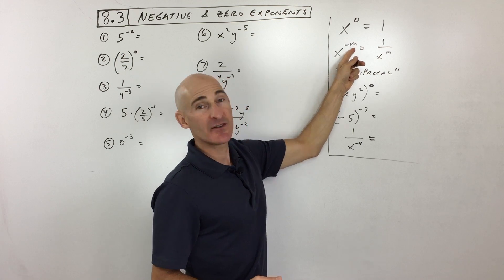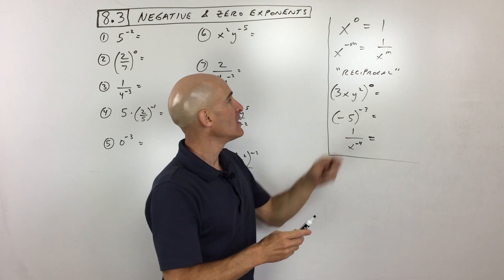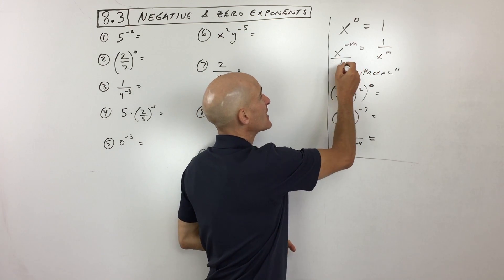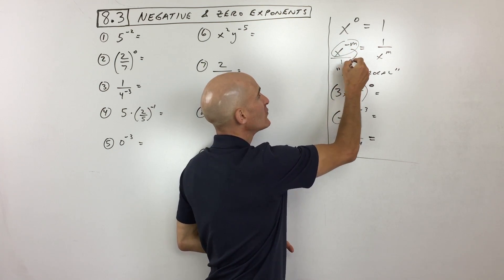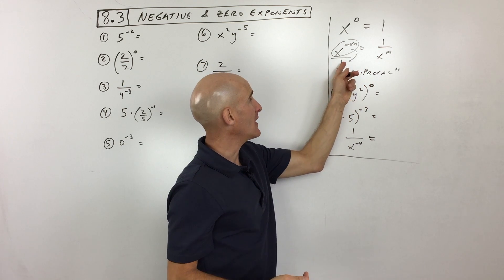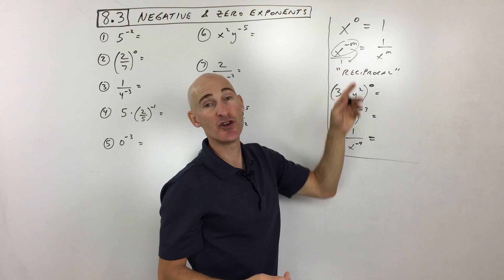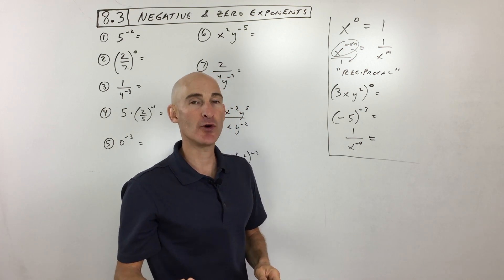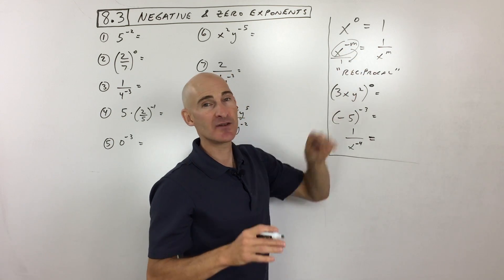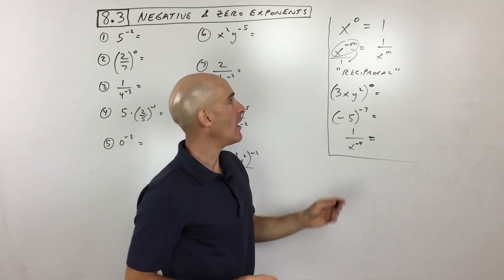Whenever you raise something to a negative exponent, that negative exponent tells you to take the reciprocal. You can think of anything as being over one — you take that quantity, move it to the other side of the fraction bar, and make it a positive exponent. If it's in the denominator with a negative exponent, move it to the numerator and make it positive. Don't make the mistake — a negative exponent doesn't make the number negative; it just means we take the reciprocal.